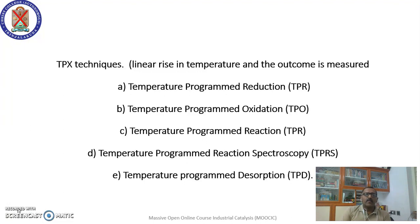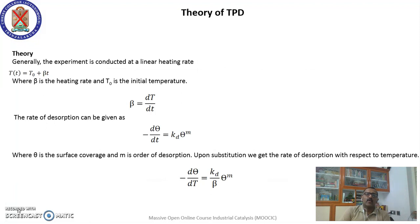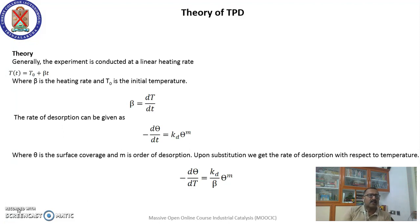Another concept is temperature programmed reaction spectroscopy, and we will study in detail the temperature programmed desorption. The experiment is generally conducted at a linear heating rate, starting from an ambient temperature rising up to 300 or 500 degrees Celsius, following a rate like 5 or 10 degrees Celsius per minute. This is expressed as T(t) = T₀ + β·t, where β is the heating rate.